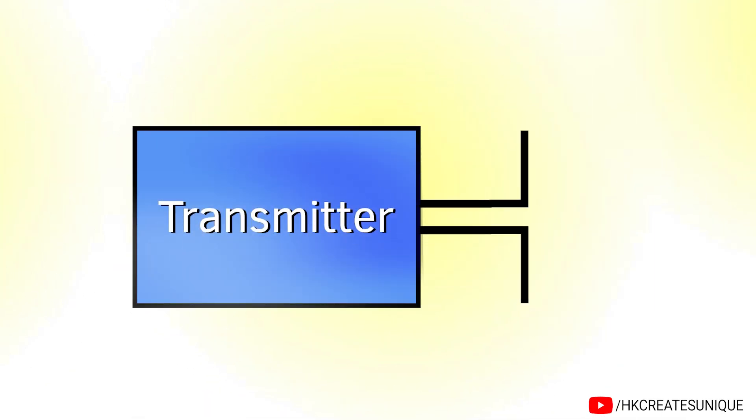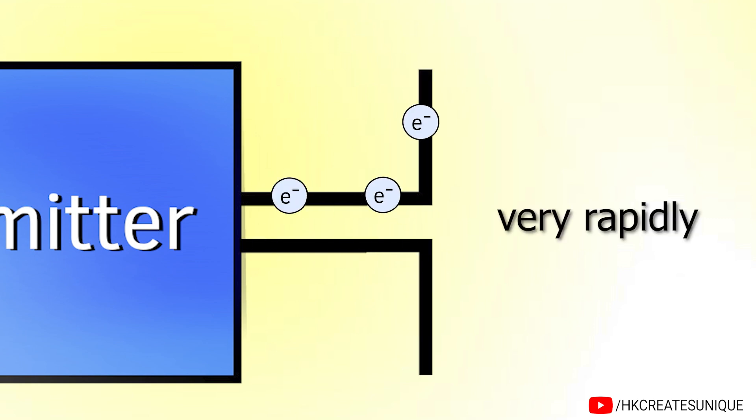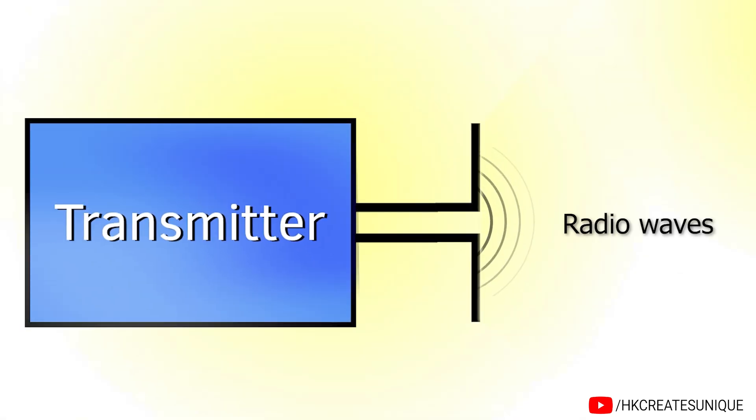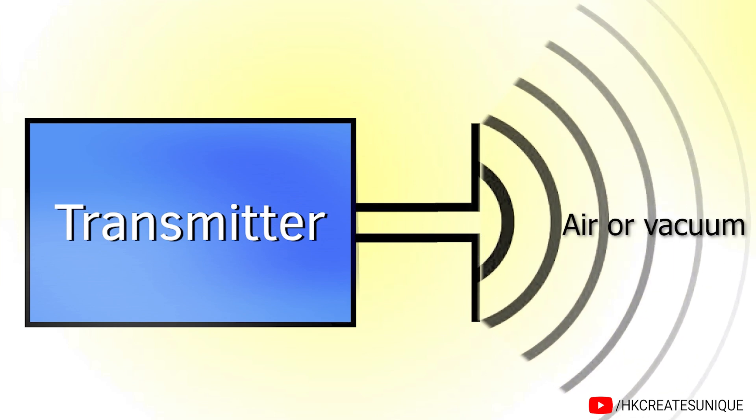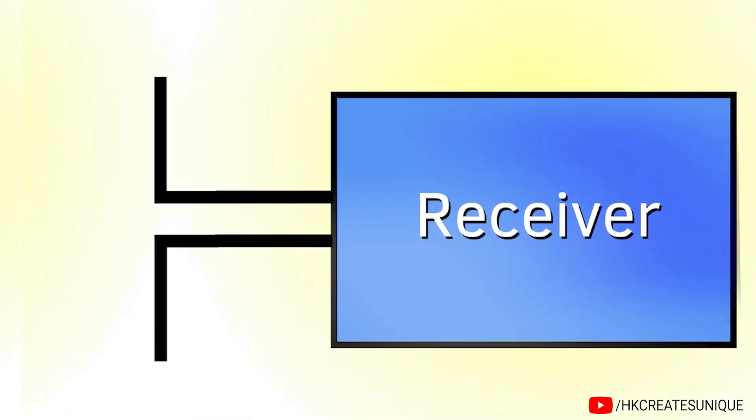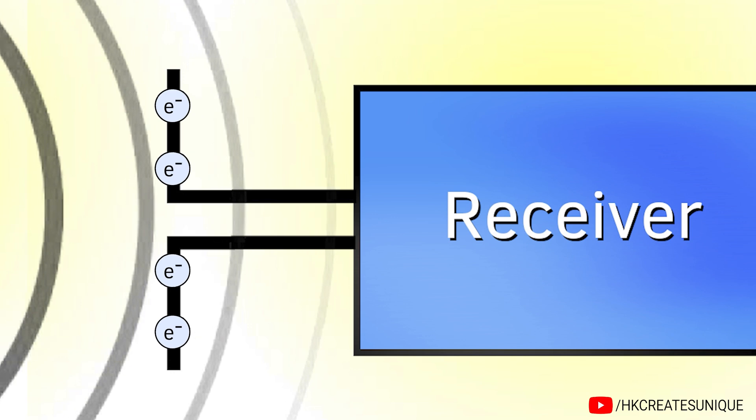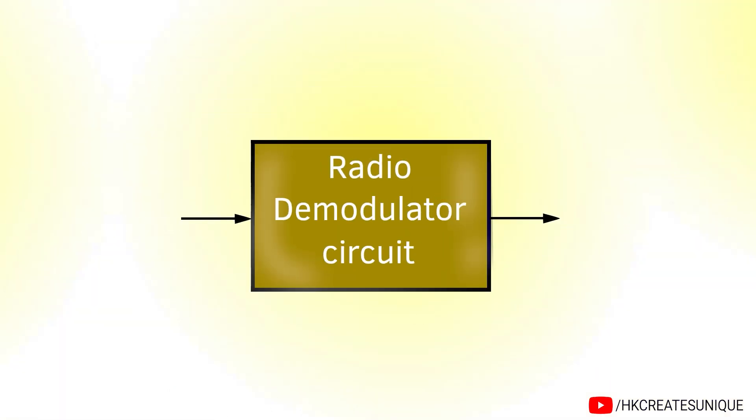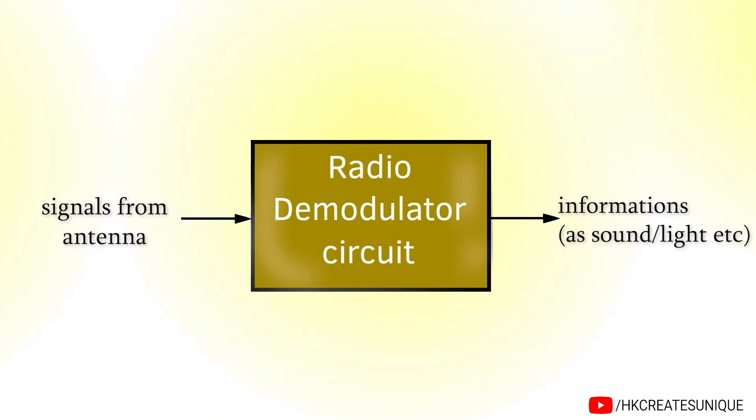In the antenna of any radio transmitter, charges move back and forth very rapidly to produce radio waves. These waves travel through air or vacuum to reach the radio receiver. The radio waves force the charges present in the antenna to move back and forth. This way, information is received.